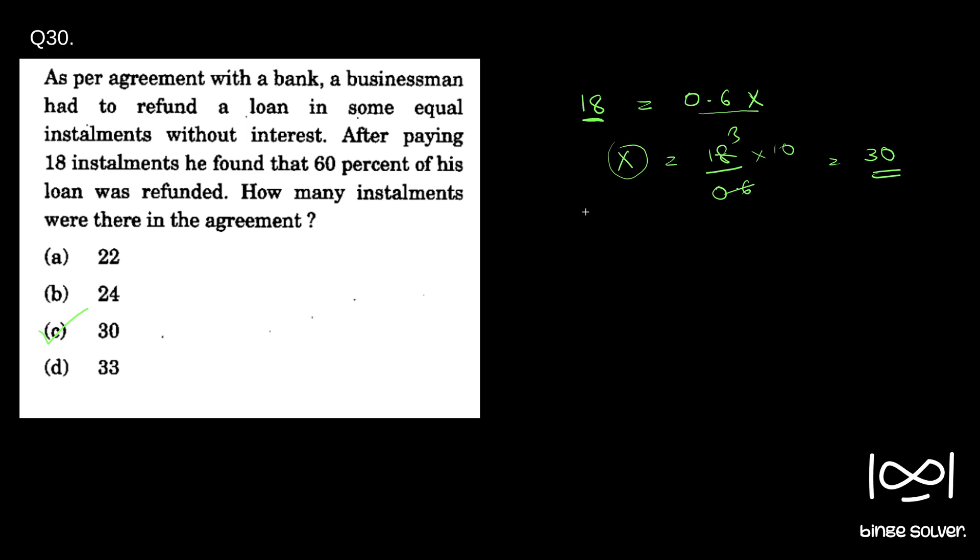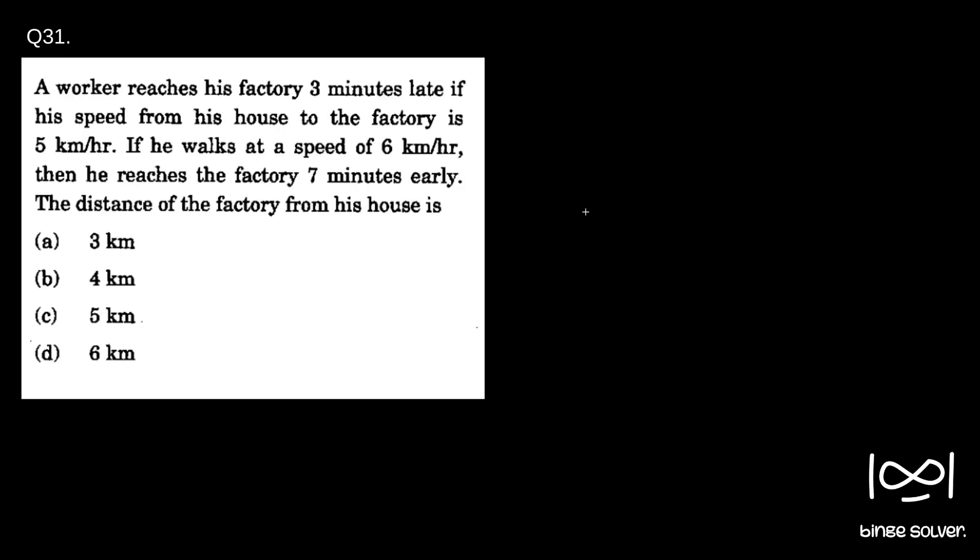Now next question, question 31. A worker reaches his factory three minutes late if his speed from his house to the factory is 5 kilometers per hour. If he walks at a speed of 6 kilometers per hour, then he reaches the factory seven minutes early. The distance of the factory from the house is?